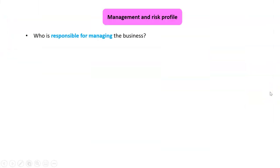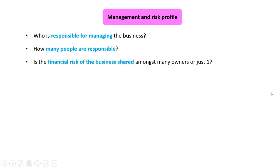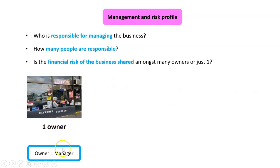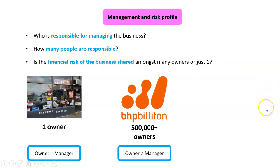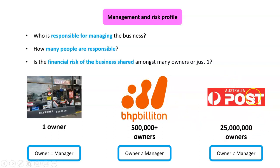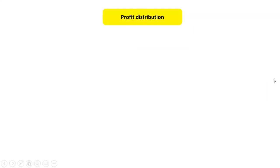Businesses also differ in management and risk profile — who's responsible for managing the business, and is the financial risk shared? With the cobbler store, the one owner is also the manager, bearing 100% of the financial risk. With BHP, shareholders don't necessarily manage it — the risk is shared. Australia Post is owned by the Australian government, so in a sense it has 25 million owners, yet they don't manage it — the Prime Minister doesn't run Australia Post.